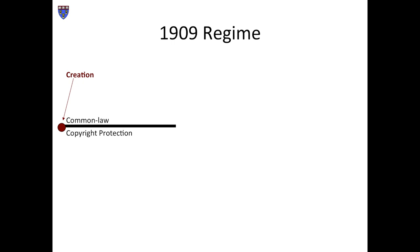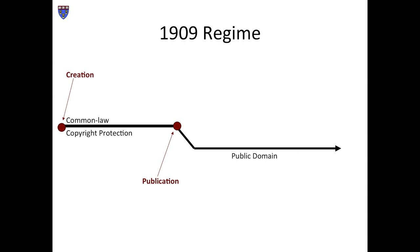Here's how that distinction worked in practice. When you first created your work — let's assume it's a novel — you acquired a copyright recognized and enforced by state common law. If you never published your novel, that common law protection would last indefinitely. But if you published your novel, your common law protection evaporated. From that point forward, you got copyright protection under federal law, if at all. If you published the novel without the requisite notice, you forfeited federal protection permanently, and the novel fell into the public domain — the set of materials that anyone can use freely.